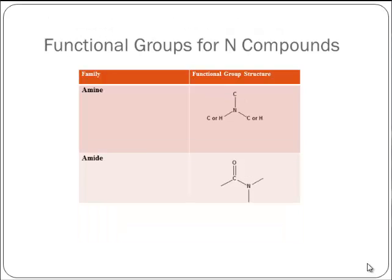There are two functional groups containing nitrogen in this course. Amines: a nitrogen with three bonds, where at least one bond must be to a carbon — it can be all three bonds to carbons, two bonds to carbons, or just one bond to carbon. Then there is an amide, a functional group containing both oxygen and nitrogen: C double bond O, where that same carbon is single bonded to a nitrogen.